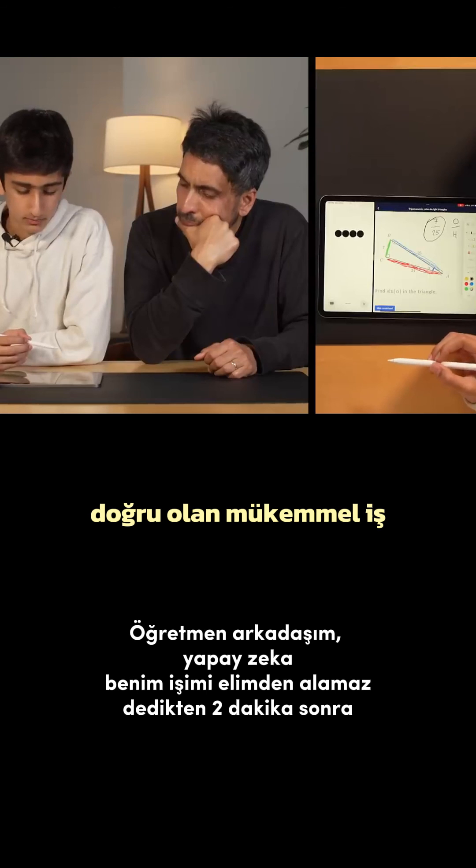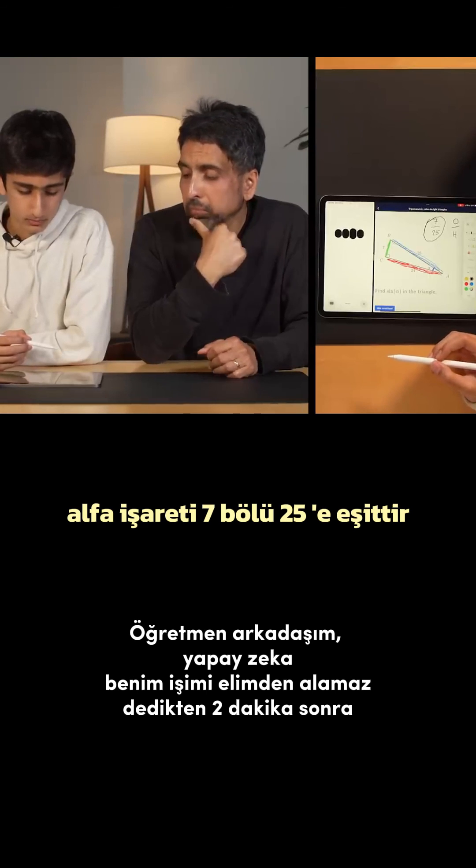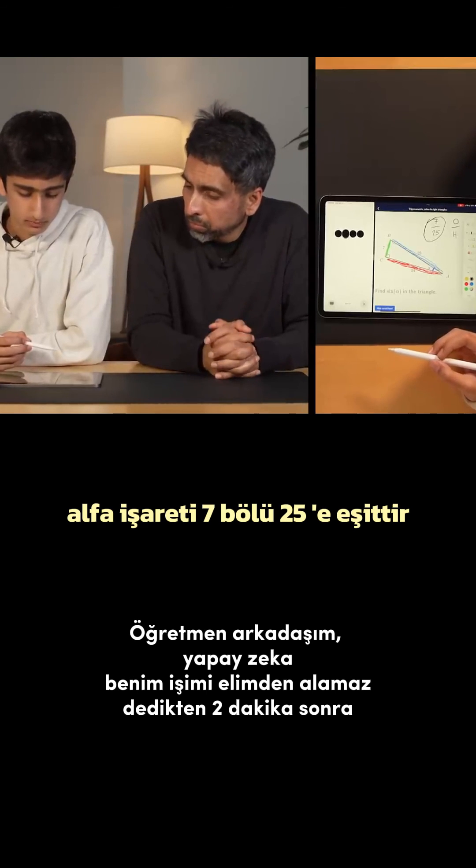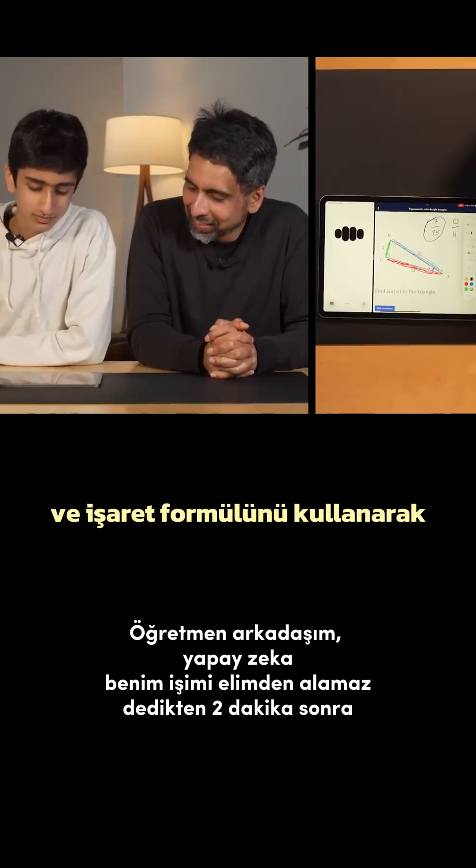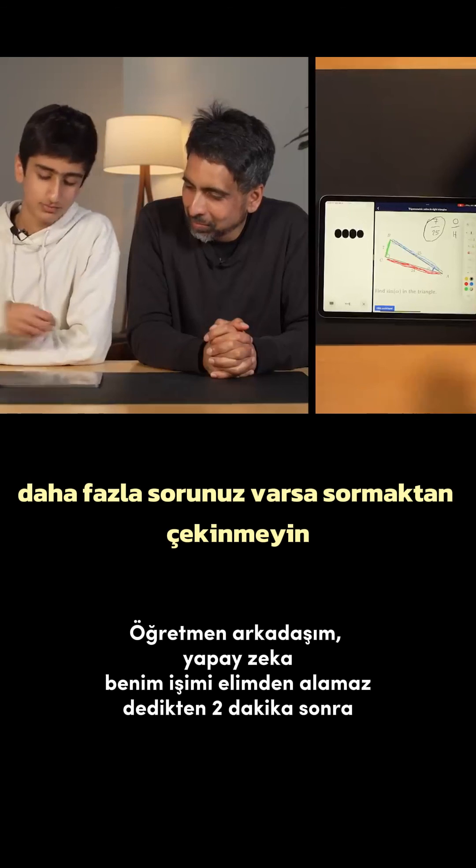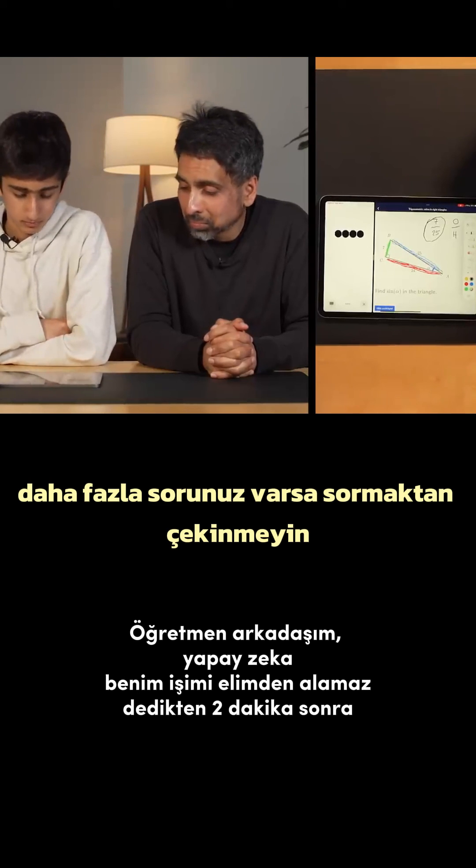Excellent work. That's correct. Sine alpha equals seven over 25. You did a great job identifying the sides and using the sine formula. If you have any more questions, feel free to ask.